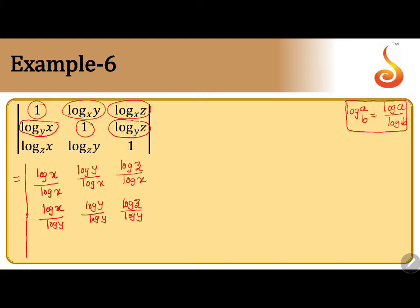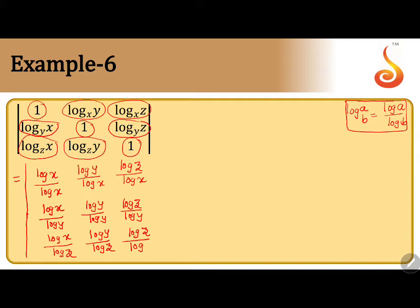Similarly, in the third row: log x to the base z is log x by log z, log y to the base z is log y by log z. Since the denominators are log z, the remaining element 1 can be written as log z by log z.